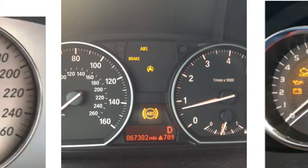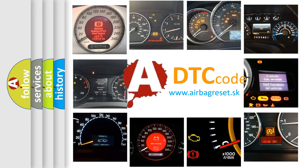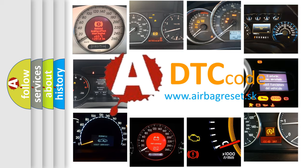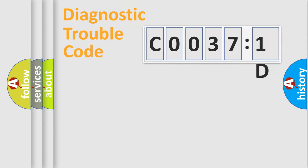How is the error code interpreted by the vehicle? What does C0037:1D mean, or how to correct this fault? Today we will find answers to these questions together.